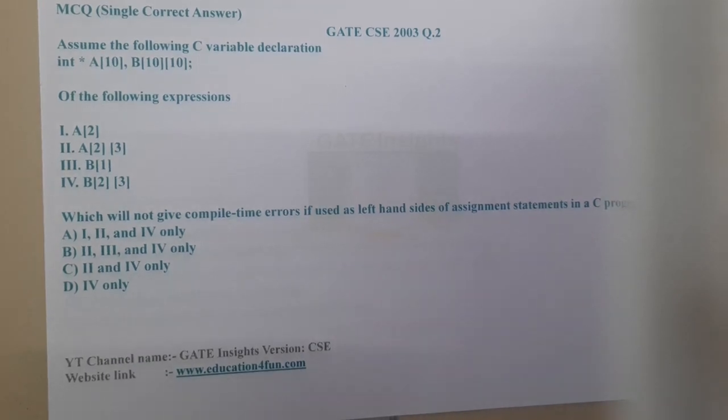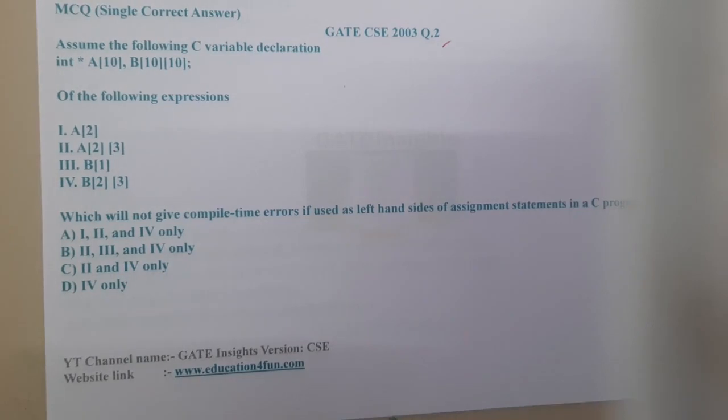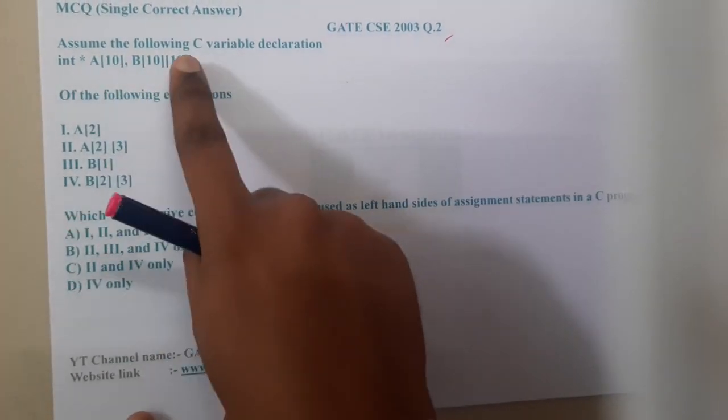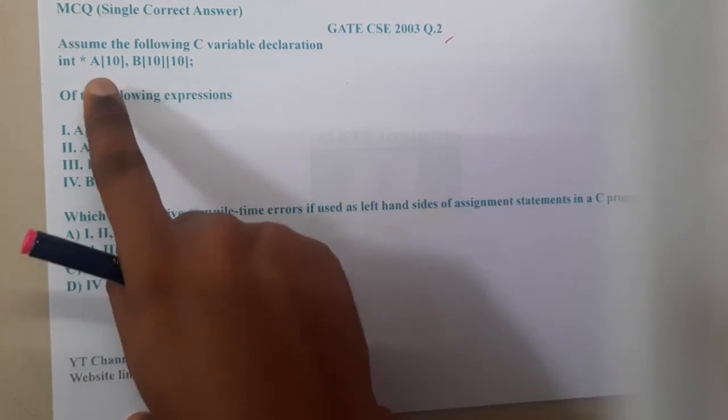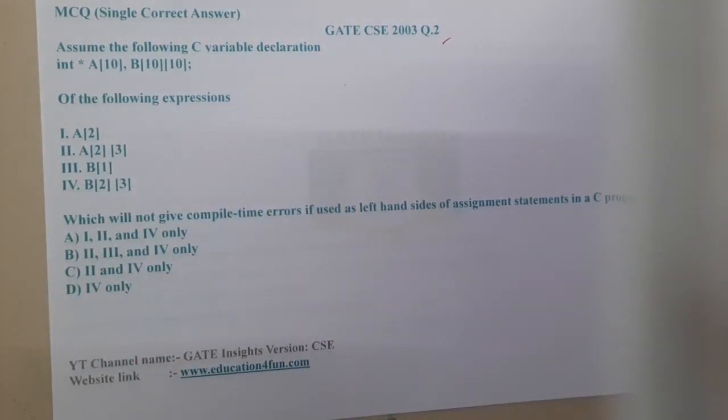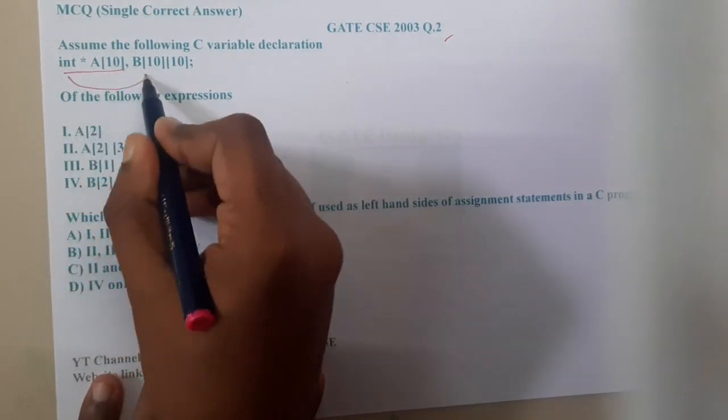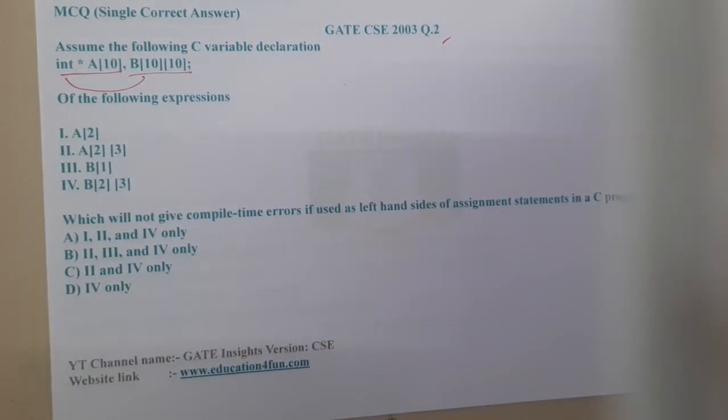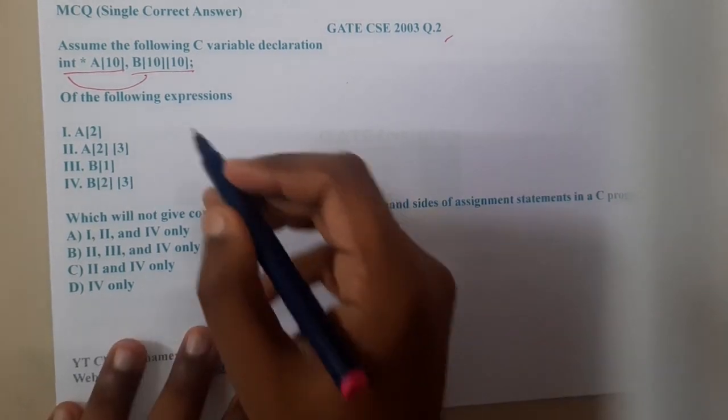Hello guys, we are back with our next lecture. In this lecture let's go to the next question, that is GATE CSE 2003 Question 2. The question is: assume the following C variable declaration. Here we are having two variables: int *a[10] (this is one variable) and int a[10][10] (that's another variable).